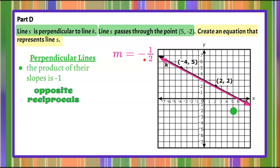Line k has a slope of negative 1/2. A line perpendicular to this must have a slope that is the opposite reciprocal — opposite in sign, so it becomes positive, and then we flip it. So positive 2 would be the slope of line s. Indeed, 2 multiplied by negative 1/2 equals negative 1, confirming perpendicularity. So line s must have a slope of 2.